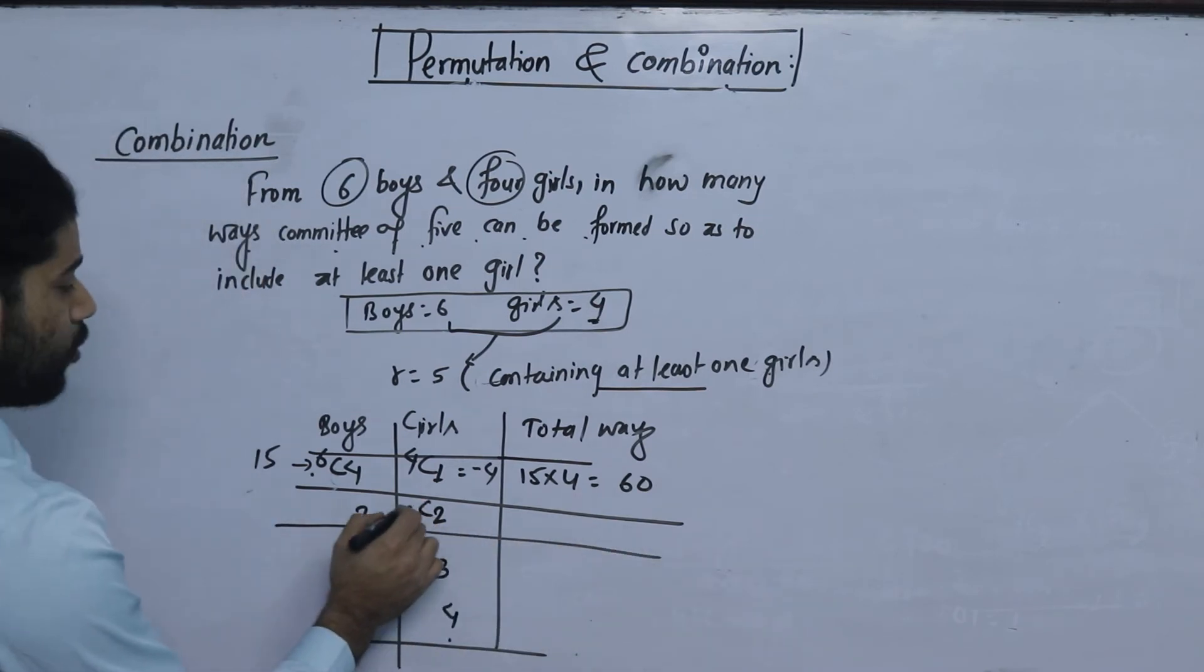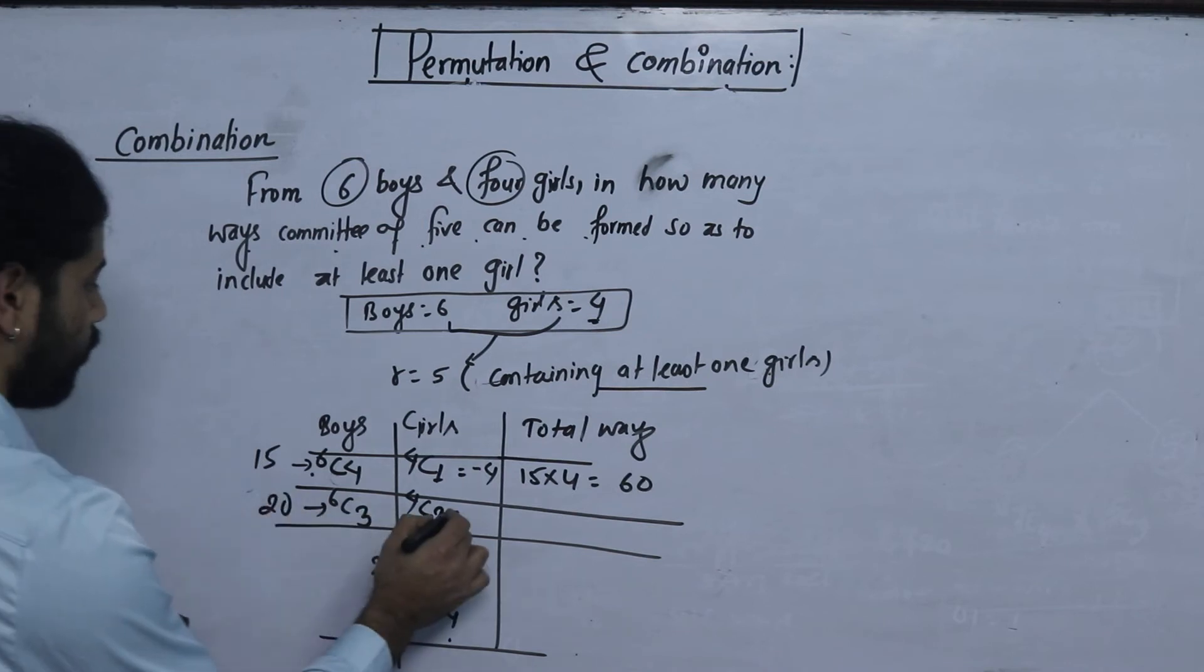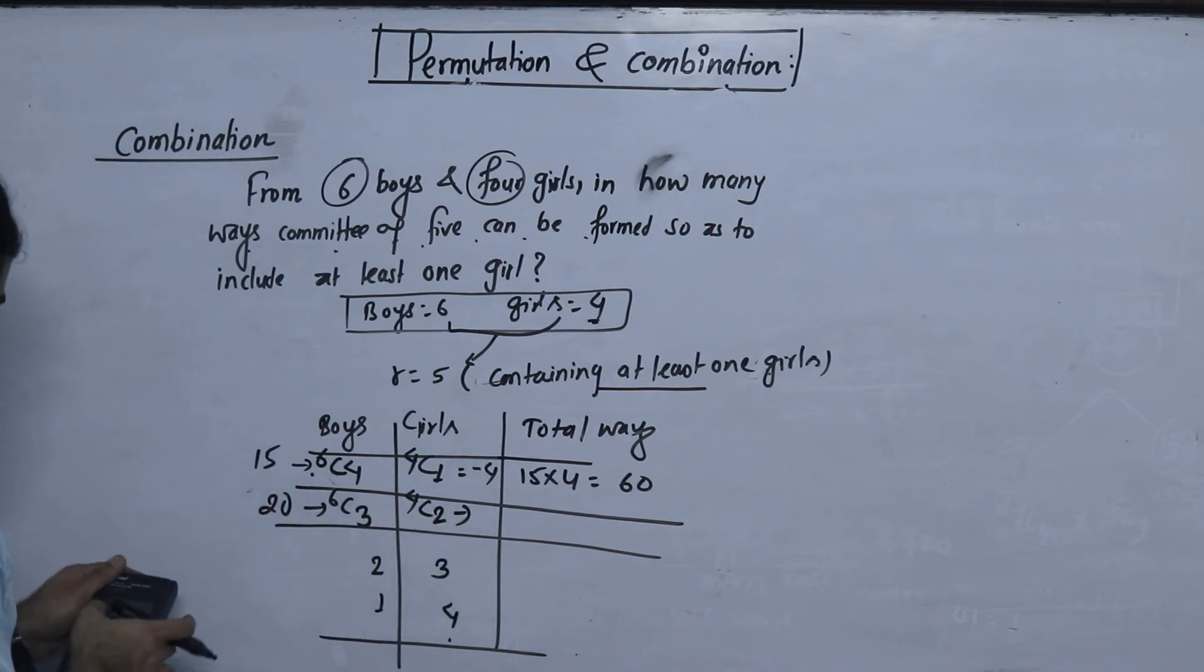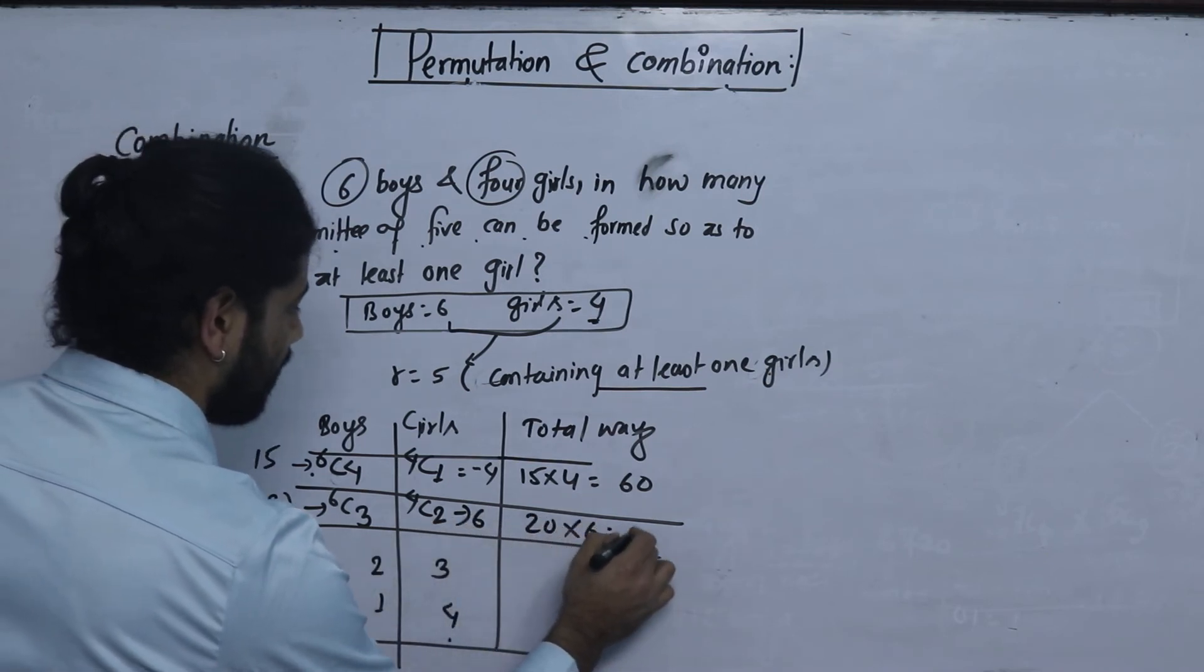If we have 2, we have 2, we have 6c3, 6c3, we have 20. If we have 4c2, we have 6. 20 into 6, 120.